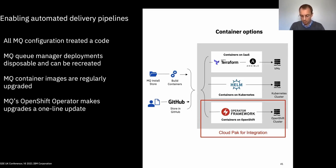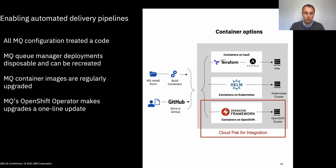In terms of allowing you to build automated pipelines, all of these MQ features allow you to do this based on either having container images you've built for your MQ deployments that you might want to update regularly and push out to your estate. Using the OpenShift operator really makes it very simple — there's a single one-line change you can make to define what image you want to use, and then the operator will seamlessly go through your estate and update the queue manager instances to take advantage of the new image or version.